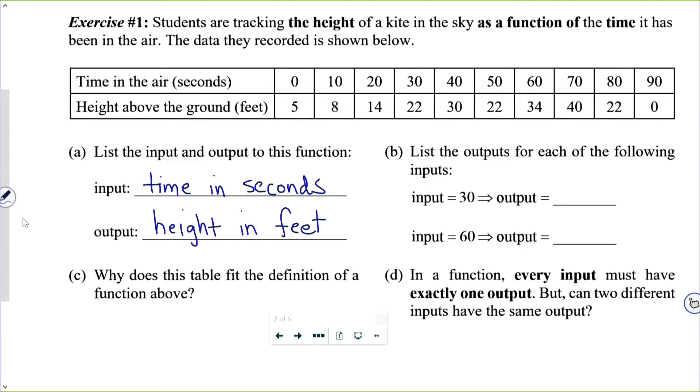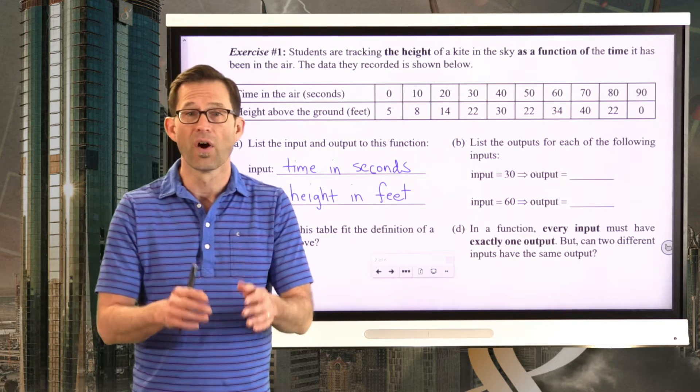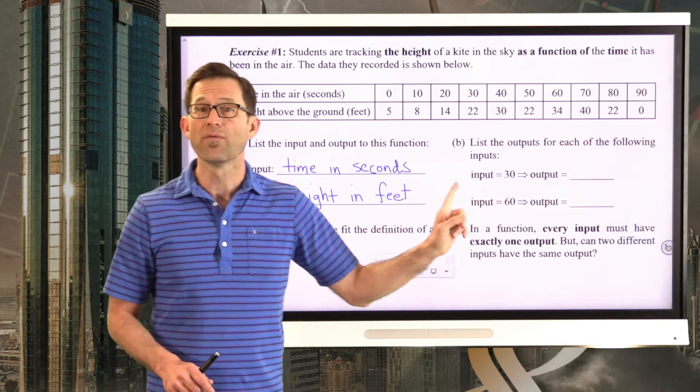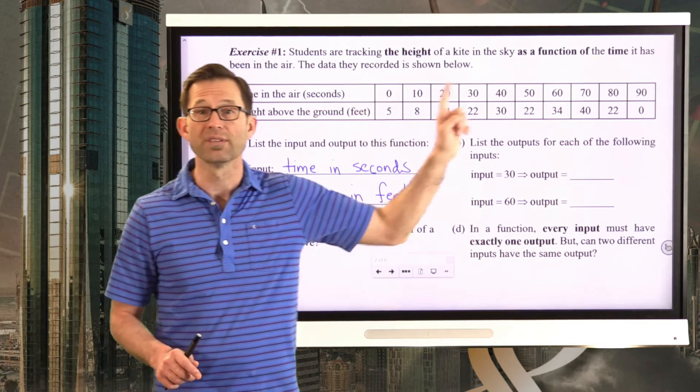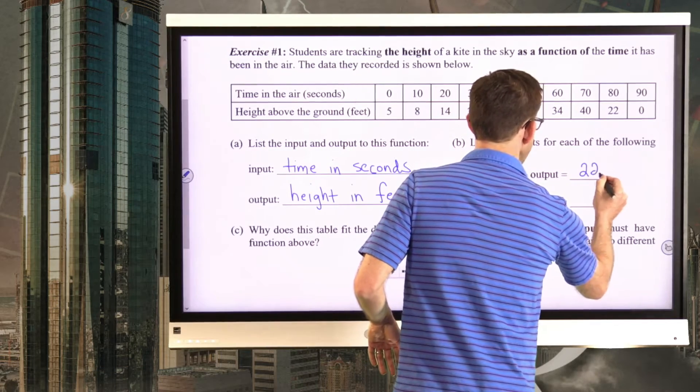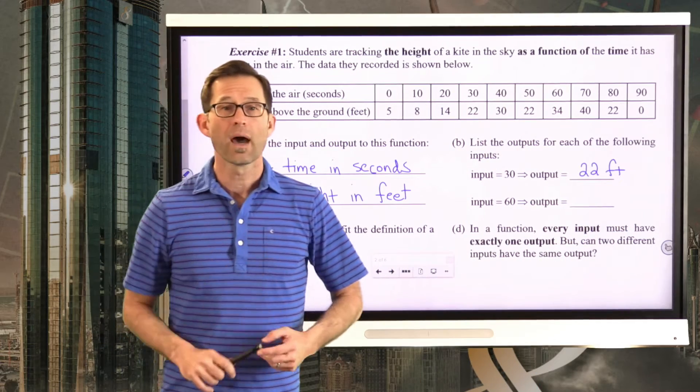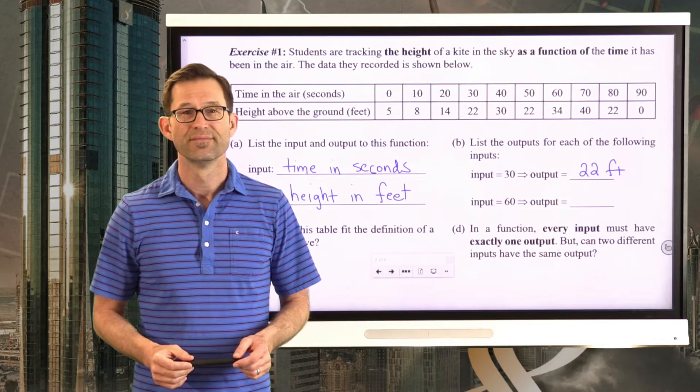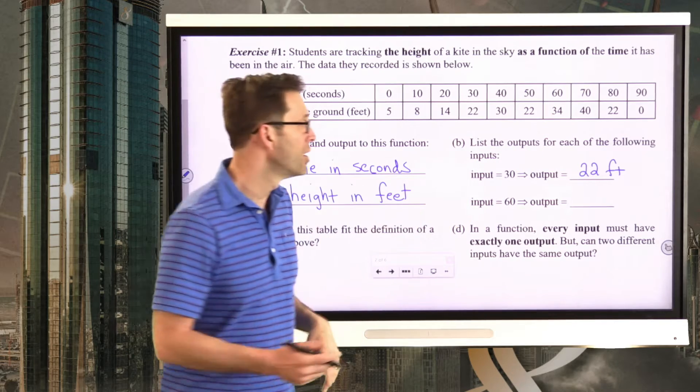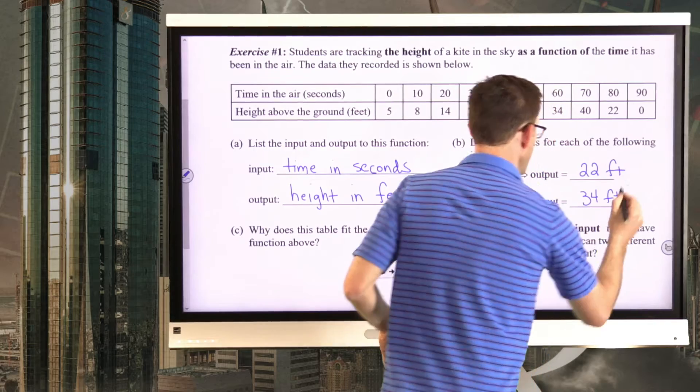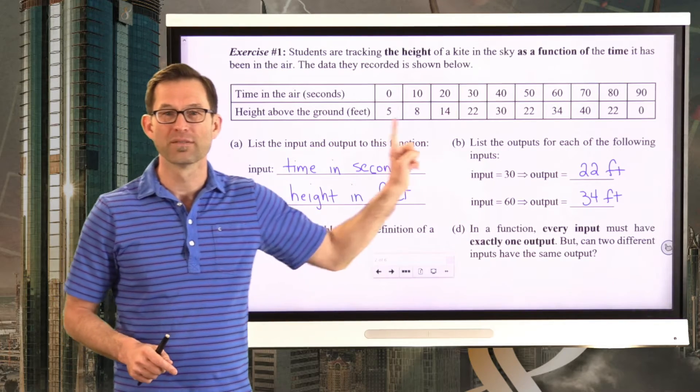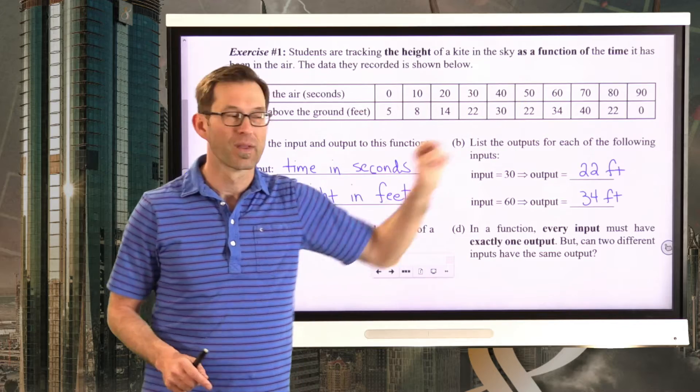This table is telling us how to assign outputs for a given input. Let's take a look at that in letter B. List the outputs for each of the following inputs. Now again, the input to the function is how long the ball has been in the air, the time it's been in the air, and the output is the height in feet. So if the input is 30, literally what that means is at 30 seconds, where's the ball? The ball is 22 feet above the ground. So the output is 22 feet. What's the output when the input is 60? Well, that's easy enough. I go along here in the table. My input of 60 gives me an output of 34. Very easy, especially when you have a table as your rule that's assigning outputs for given inputs.